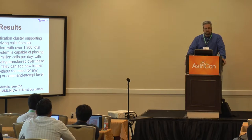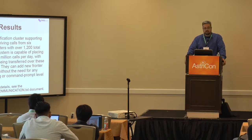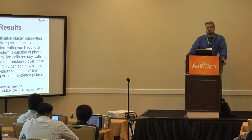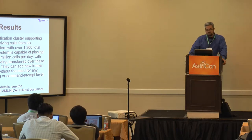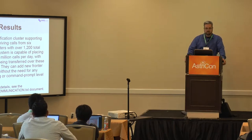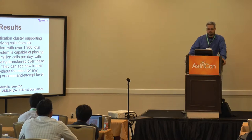They have a verification cluster with up to 300 agents taking inbound calls that are basically transfers from six separate fronter clusters with over 1,200 total agents — 200 to 300 per cluster. The whole system is capable of placing and receiving over 3 million calls a day with up to half a million being transferred over these CCC transfer lines. They can add new fronter clusters as needed and turn them off just as quickly. They actually set up that sixth cluster cross-cluster communication without even contacting us — entirely self-sustaining through web admin. For more details, see the cross-cluster communication document at VICIdial.org/docs.